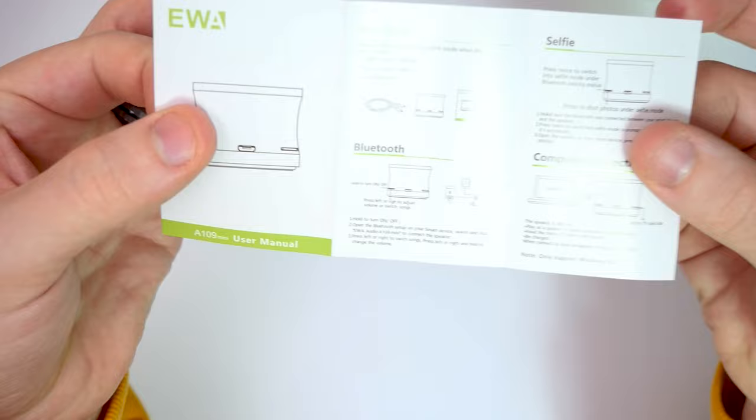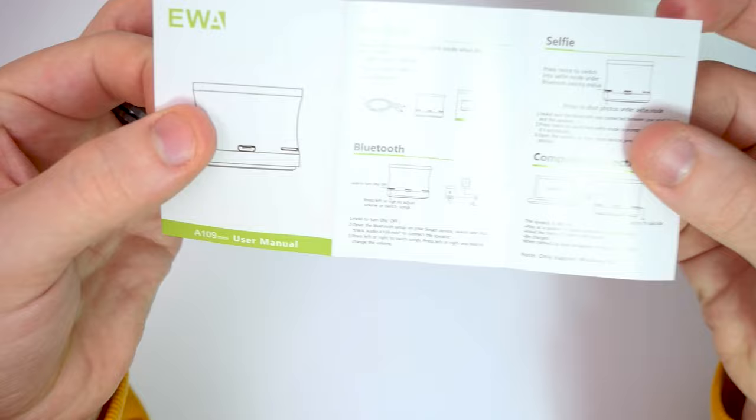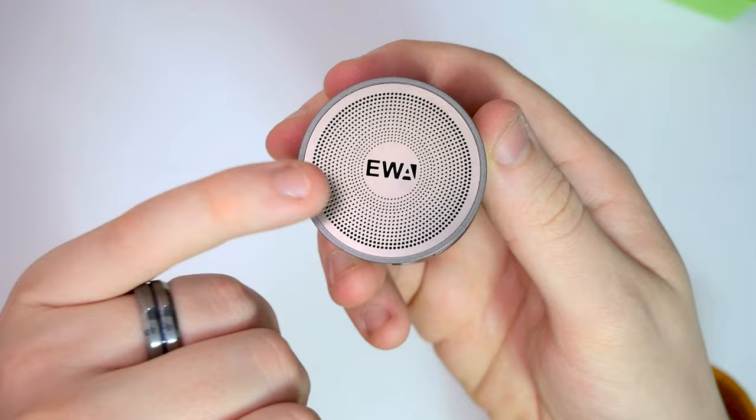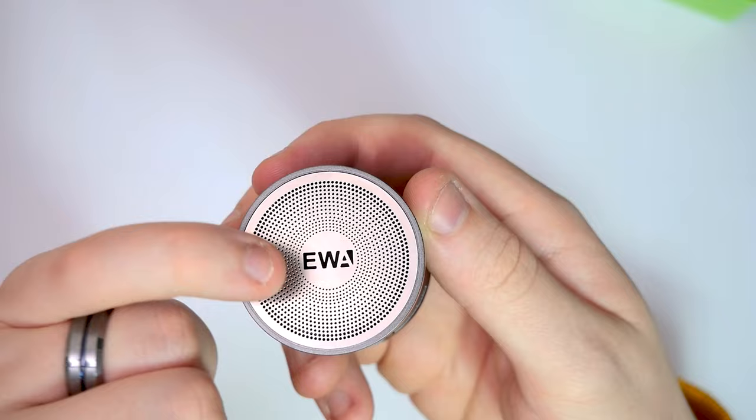Pretty much what we've got here is USB to micro USB, nothing fancy, no type C or anything like that. This is pretty much all we've got working with, which isn't a massive issue. And now we just get a little tiny user manual here. This is pretty much just going to tell you how to connect it to bluetooth, how to charge it, and that's pretty much all you get.